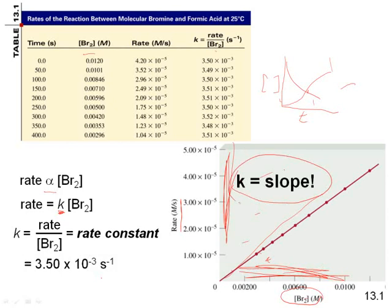K — the rate constant — stays the same as concentration changes, while the rate changes. Whether I look at any individual data point and calculate rate over concentration, I get nearly the same value — almost a perfect straight line.